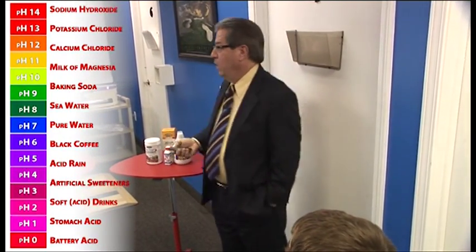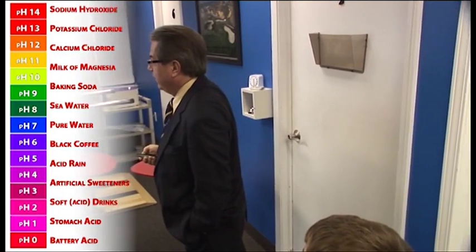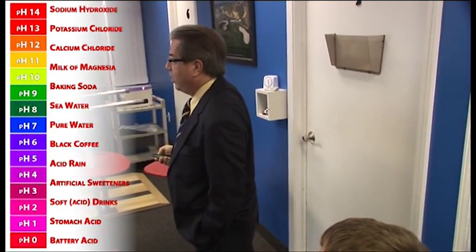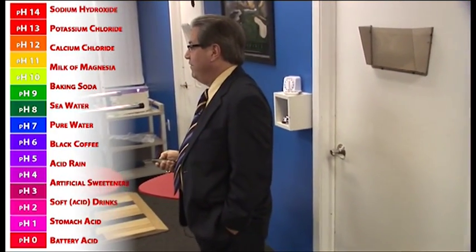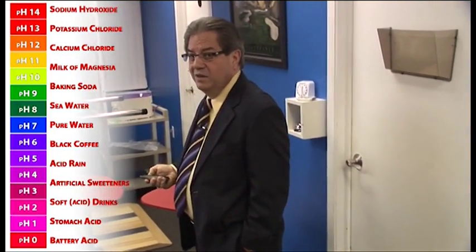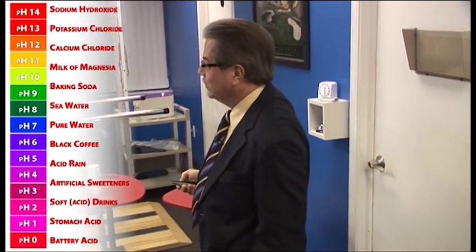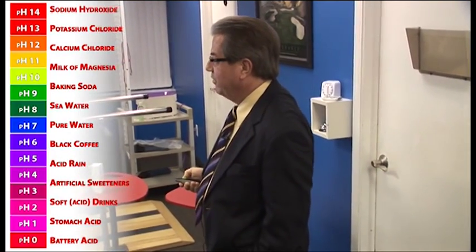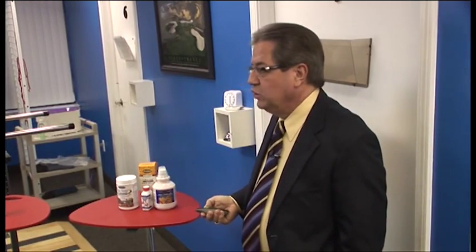Is it around here — around black coffee, which would be about 5? Acid rain is about 4. Artificial sweeteners are about 3. Soft drinks are at a pH of about 2.5 to 3.5. I call them acid drinks — they're not soft. There's nothing soft about them.